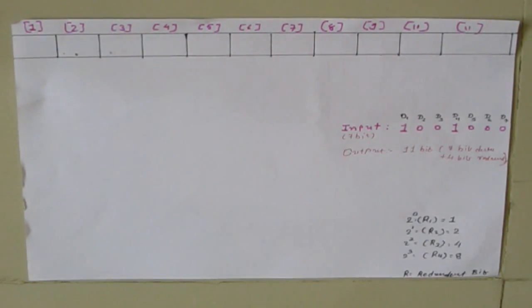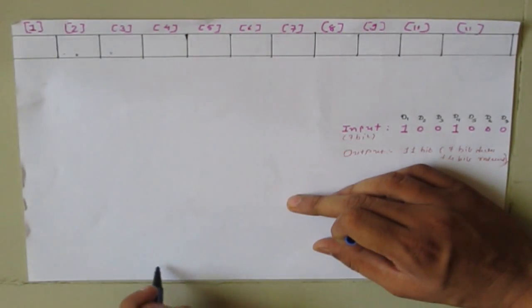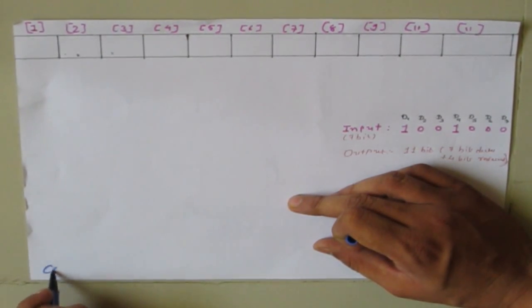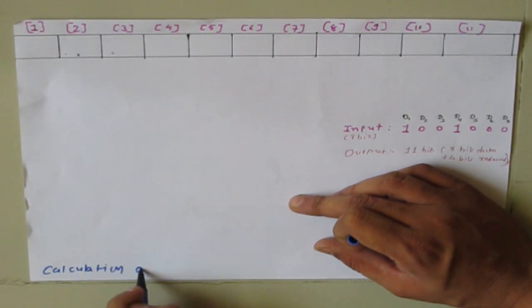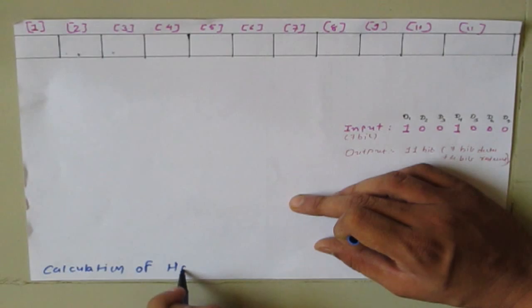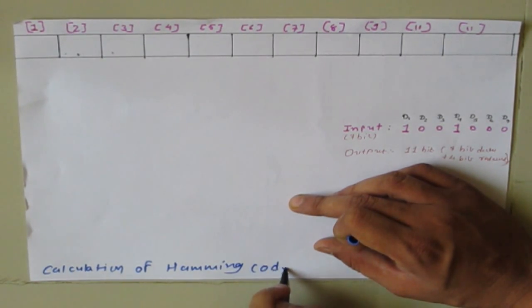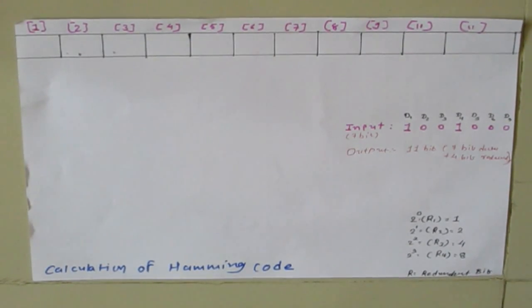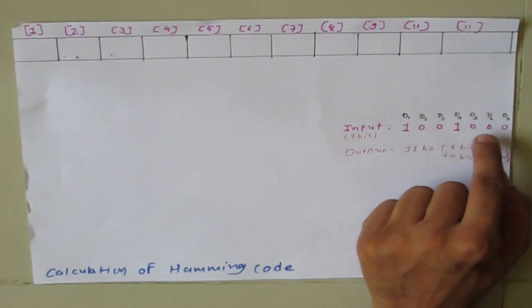Today in this video we will see how to calculate Hamming code. It is very simple to calculate the Hamming code — for error detecting and correcting. Now let us take one example. The example for us is 1001000.